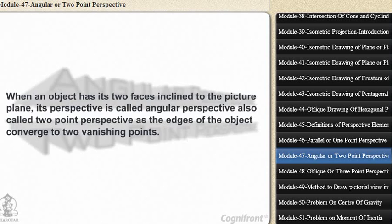When an object has its two faces inclined to the picture plane, its perspective is called angular perspective, also called two-point perspective, as the edges of the object converge to two vanishing points.